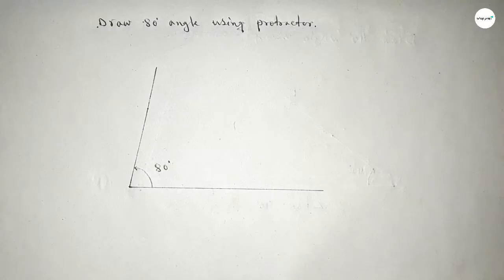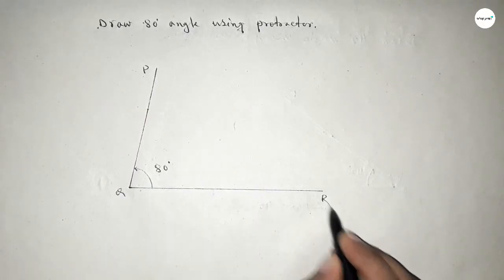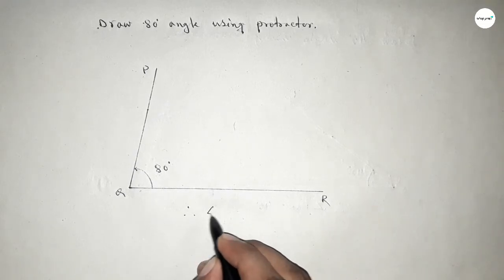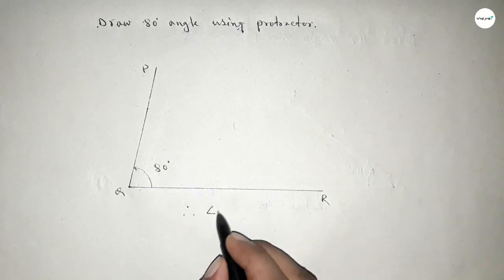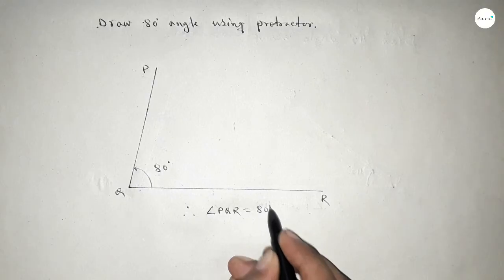Now this is P, Q, and R. So therefore, angle PQR equal to 80 degrees. That's all.